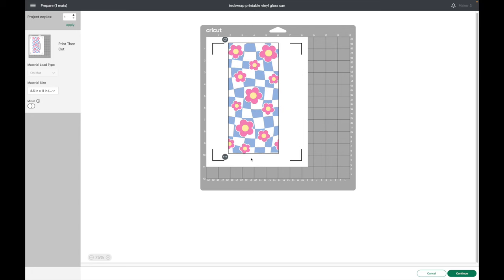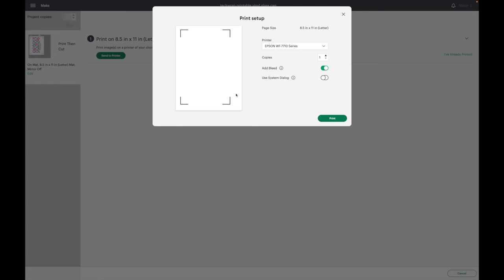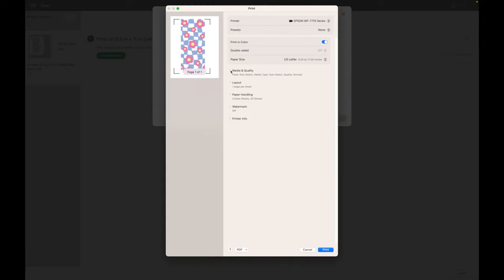I'm not going to mirror my design. I'll just click continue. I'll hit send to printer. I am going to keep my bleed on. The majority of the time I recommend keeping your bleed on because it actually helps with more accurate cuts. I'll select use system dialog.